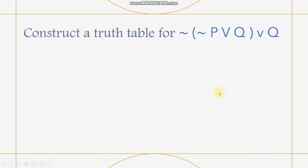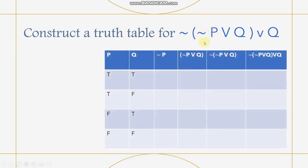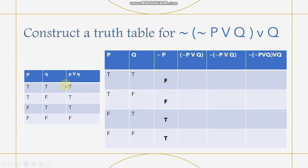For the last application question, we construct a truth table for ¬(¬P∨Q)∨Q. First, we get the value of ¬P by negating the first column — the negation of truth is false. Then we compute ¬P∨Q using the disjunction table. When false and true, it is true. When false and false, it is false. When true and true, it is true. When true and false, it is true.